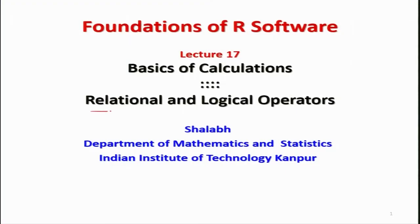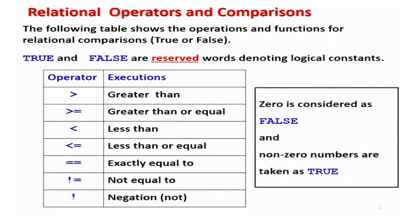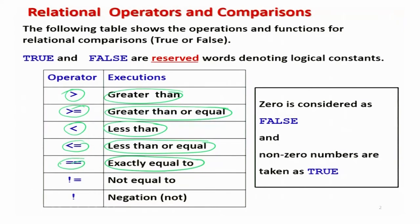We are going to talk about relational and logical operators in this lecture. You learned a couple of logical and relational operators: greater than (indicated by >), greater than or equal (>=), less than (<), less than or equal to (<=), exactly equal to (==), not equal to (!=), and negation indicated by the exclamatory sign.